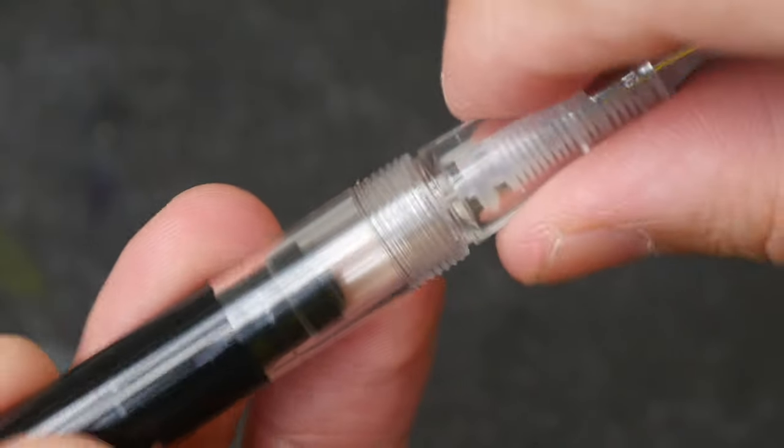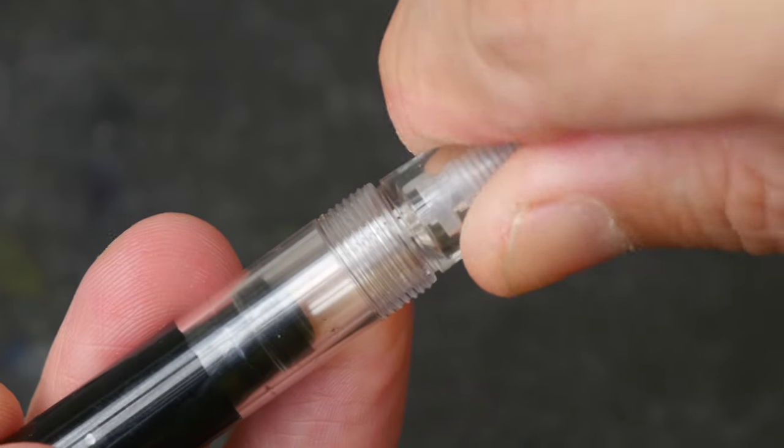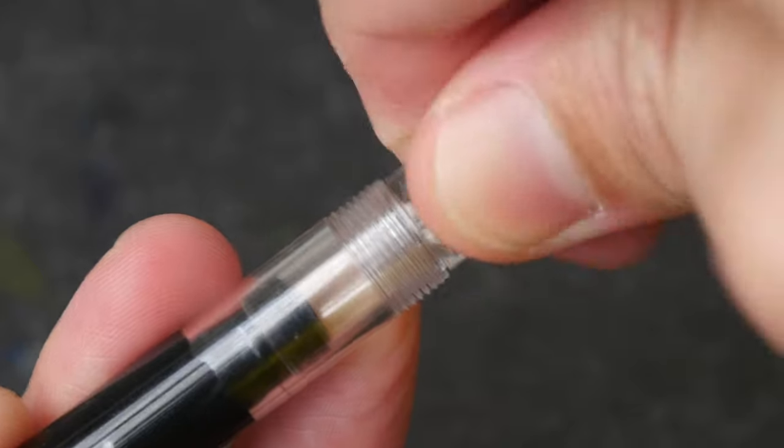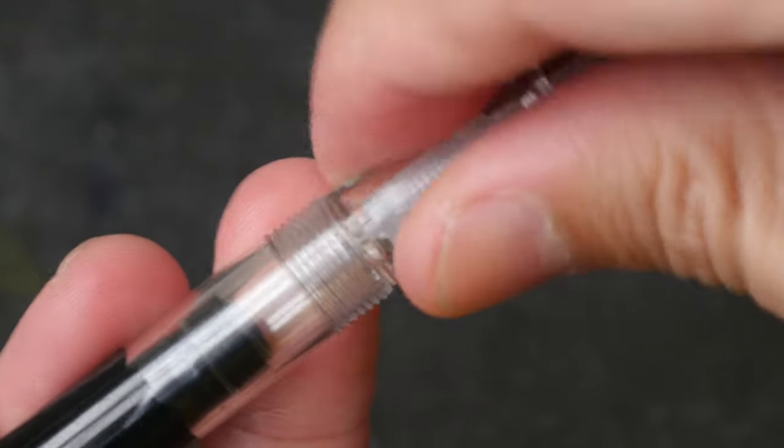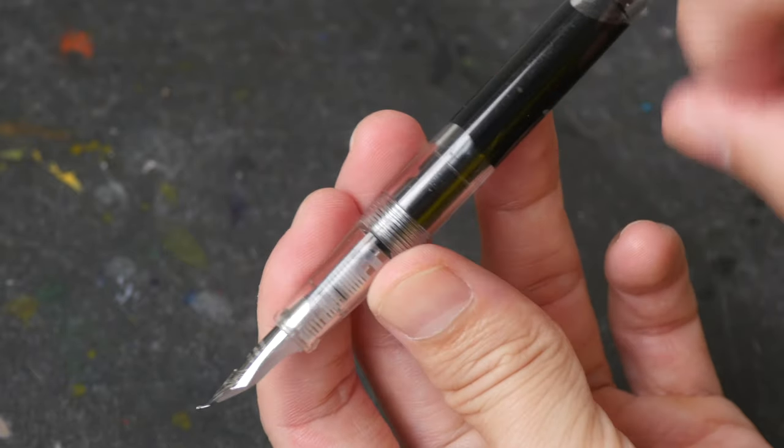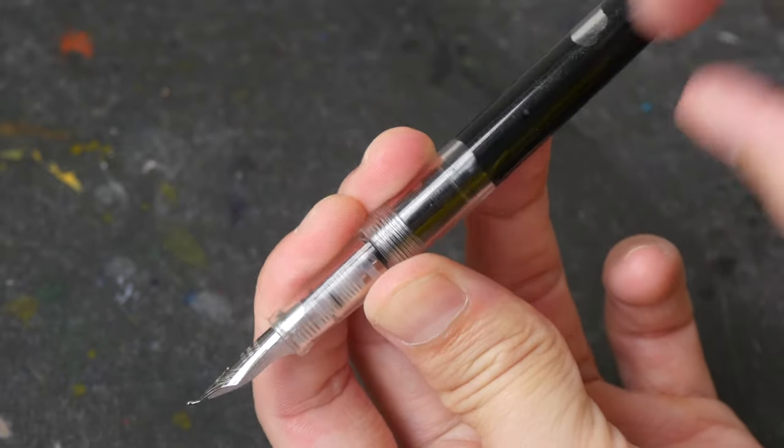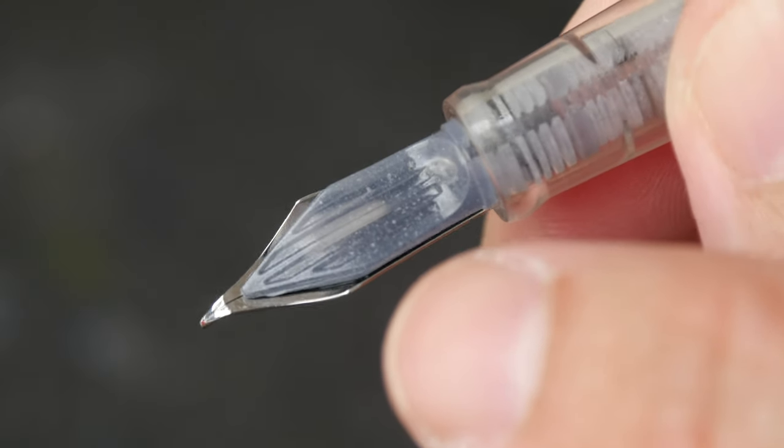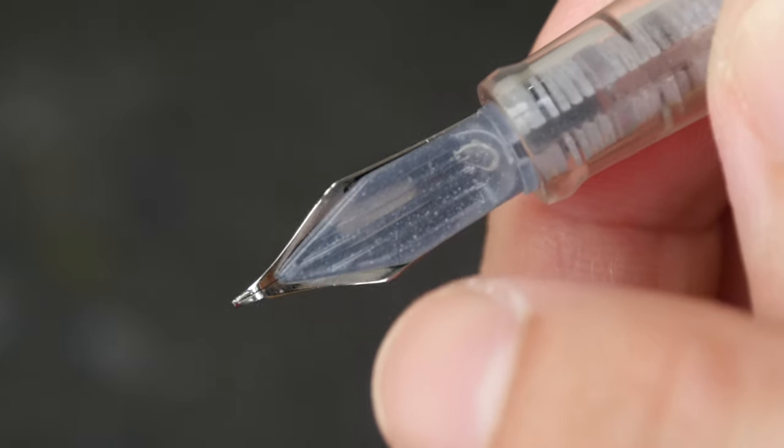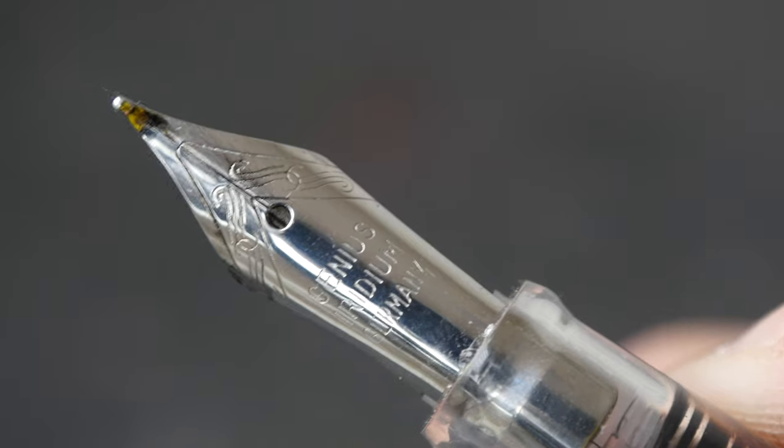The black part inside is some sort of rubber, so when I try to screw this tight, I can feel the resistance. Okay, so now it's tight. Let's see how the ink flows into the grip section. Let me help it along. The feed is translucent, so I can see some ink between the nib and the feed.